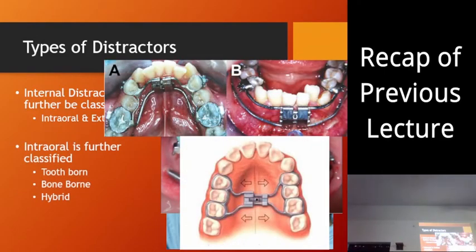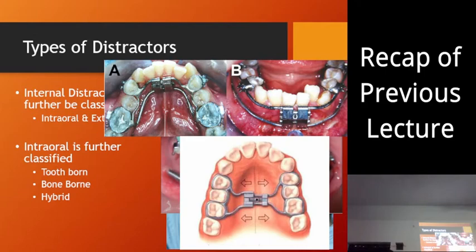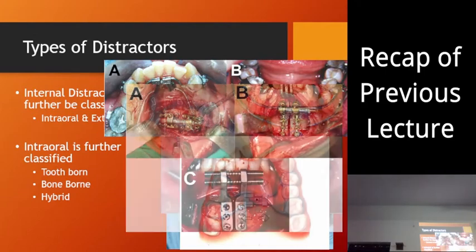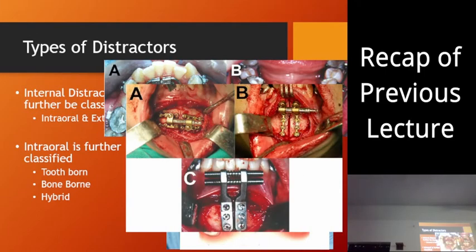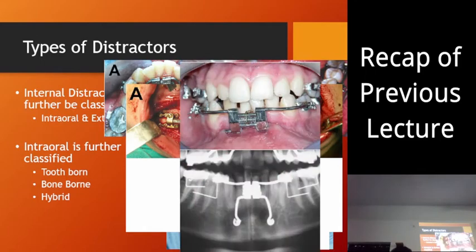Internal distractors can be further classified as tooth-bone, bone-bone, and hybrid. The hyrax device is tooth-bone — it is attached only to the teeth. Bone-bone means the distractor device is attached only to the bone, not the teeth. Hybrid means the distractor device is attached to both bone and teeth.